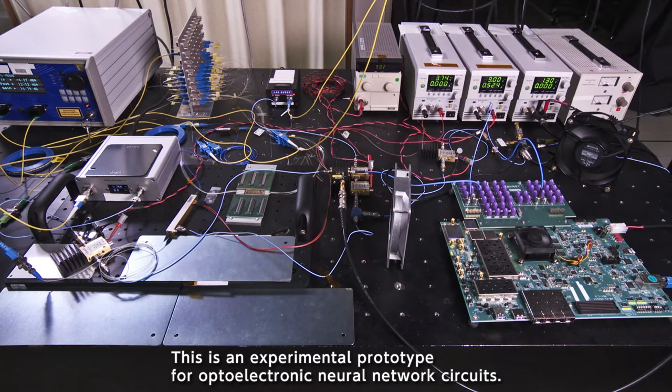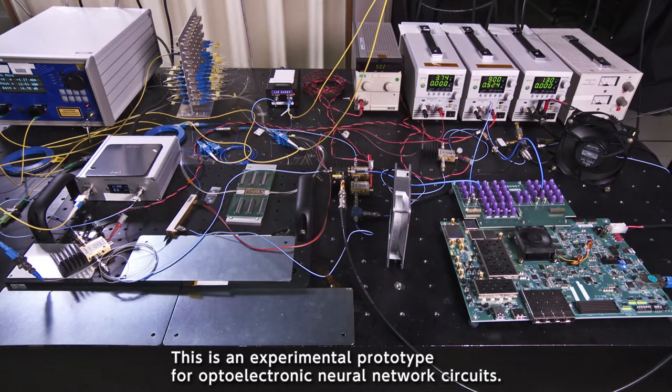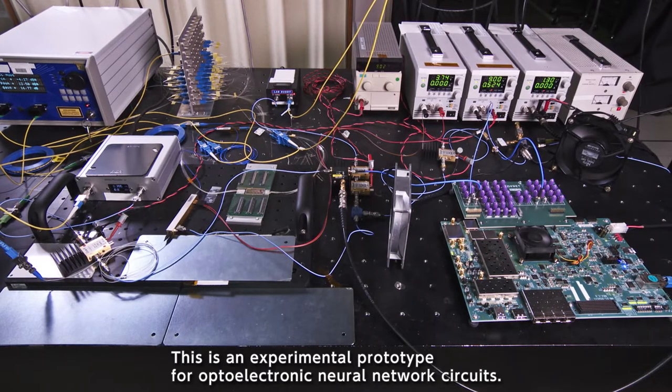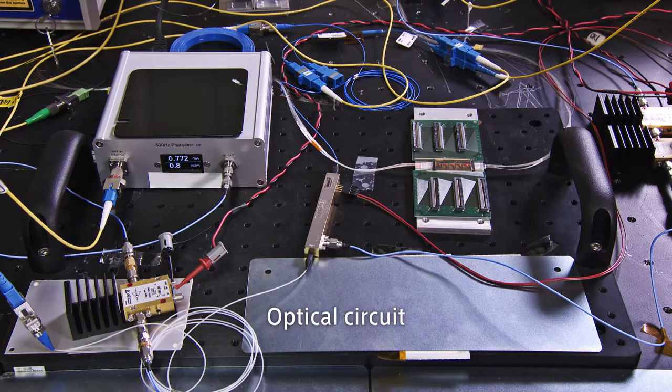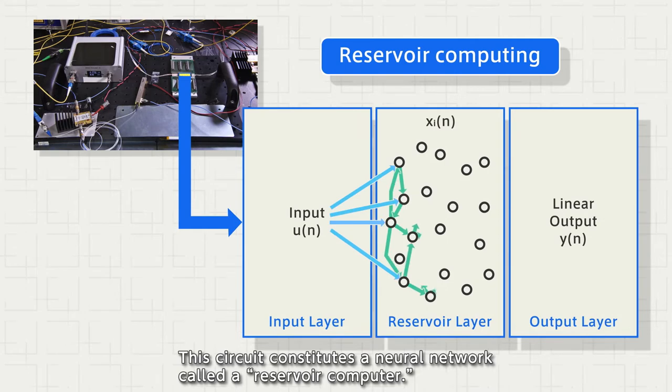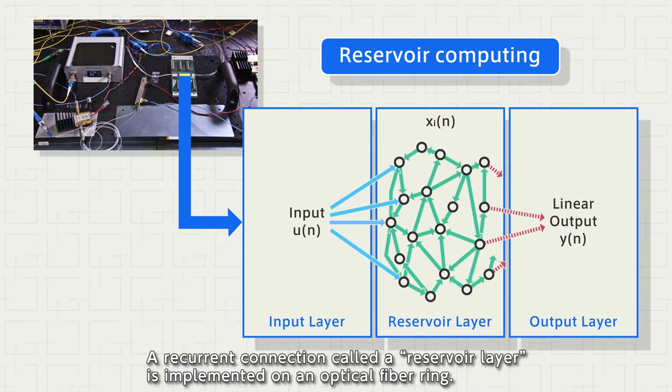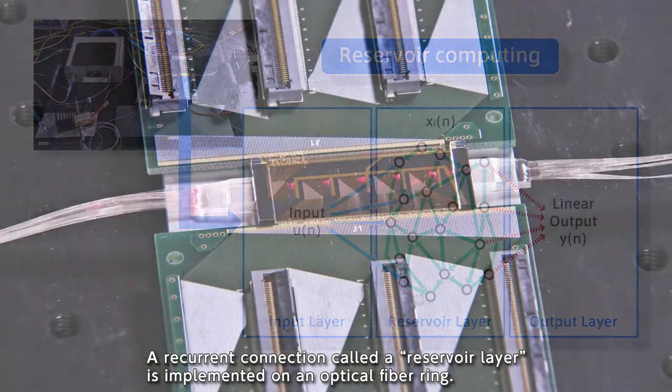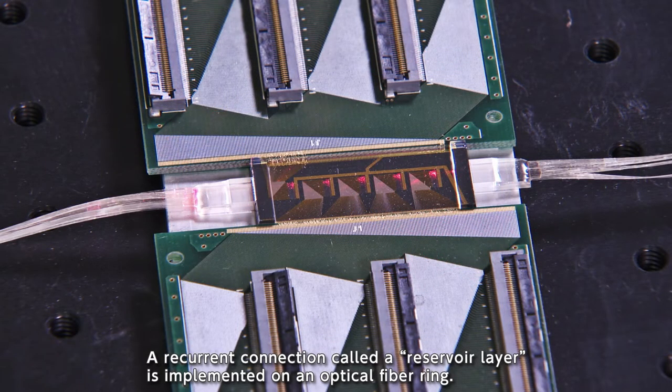This is an experimental prototype for optoelectronic neural network circuits. This circuit constitutes a neural network called a reservoir computer. A recurrent connection called a reservoir layer is implemented on an optical fiber ring.